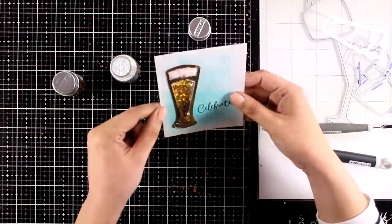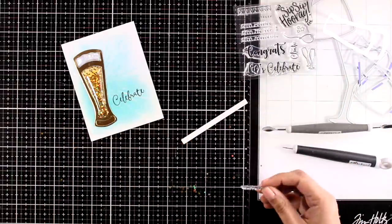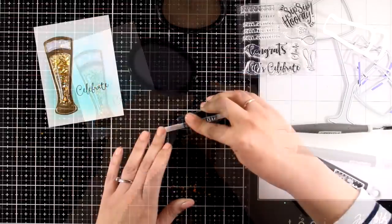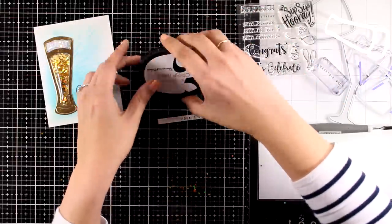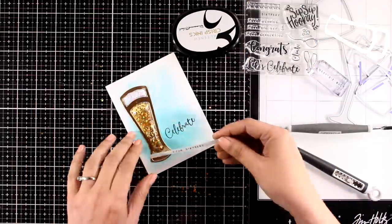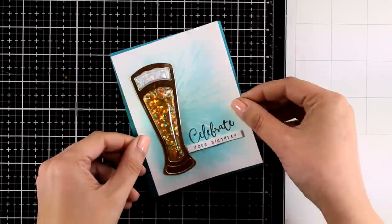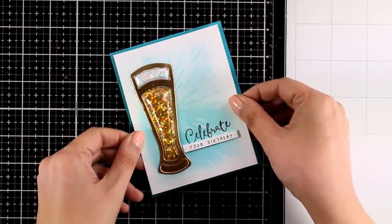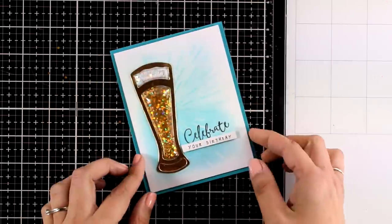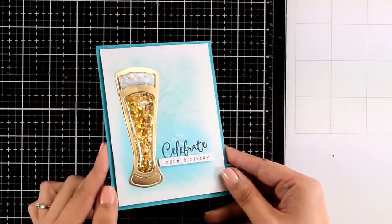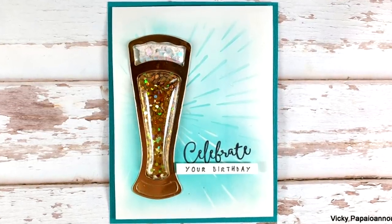Now I'm going to complete the sentiment by stamping one more thing, a secondary sentiment that says your birthday just on a thin strip of white paper and I'm going to stick that just below celebrate with some foam tape at the back. I have some foam tape at the back of this panel and I'm going to stick it on a blue card base that I look through my stash to match the color of my background. And here are some close-up photos on the first card for today.